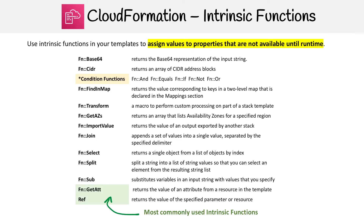Let's take a look at intrinsic functions for CloudFormation. What these do is allow you to assign values to properties that are not available until runtime. The two most popular ones are all the way at the bottom there — those are Reference and GetAtt. These are so important that we're going to cover them shortly in other slides.